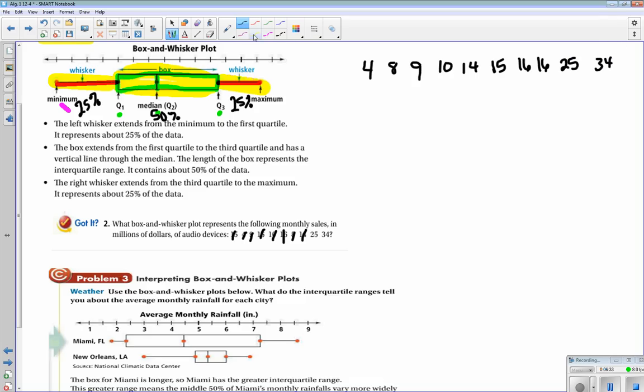Alright, so let's find the median. I have 10 sets of data, so my median is going to be in between 14 and 15. In this case, it will be 14.5. There's our median for Q2.